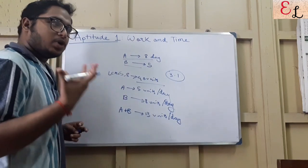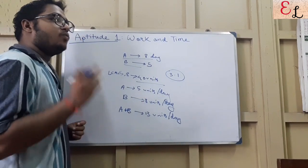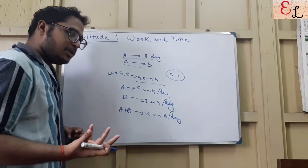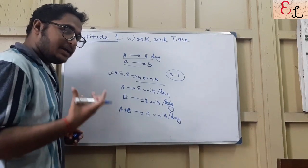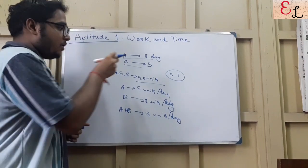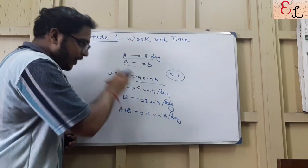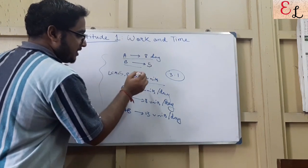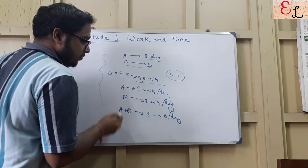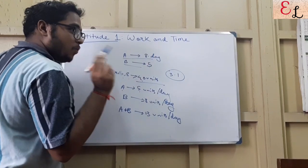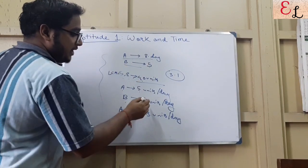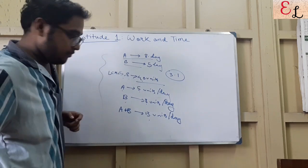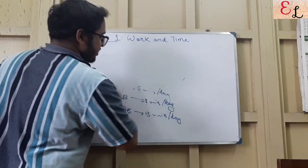This is the simplest problem that can be dealt with. Take out the LCM, consider it to be the total units of work, then find out how many units of work each of them does. Since it is an LCM, both the works will be multiples of this number of days, so per day you will find a whole number unit of work done by A or done by B. Then you apply the combination and solve the problems. A does the work in 8 days, B does the work in 5 days. Consider it to be 5 into 8, 40 units of work. A does 5 units per day, B does 8 units per day. When they work together, 13 units of work they do per day.